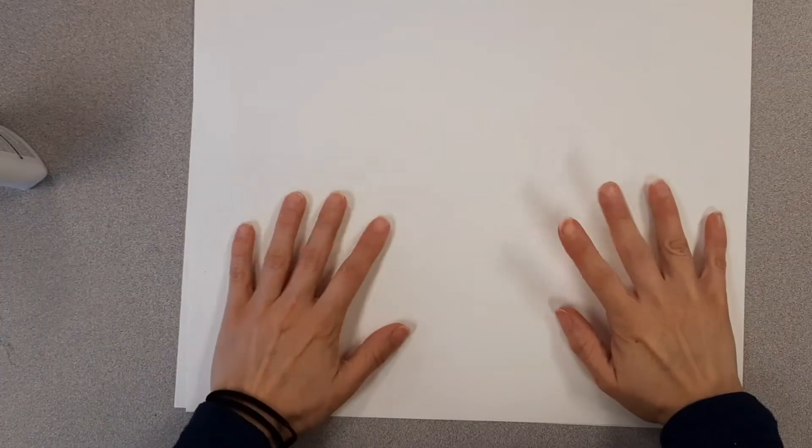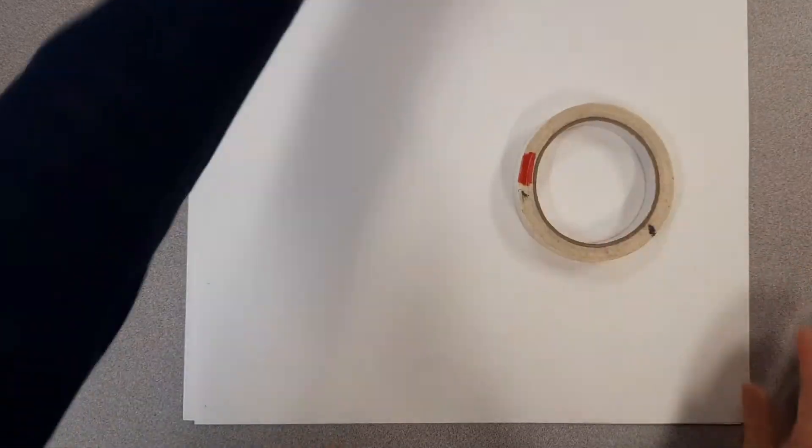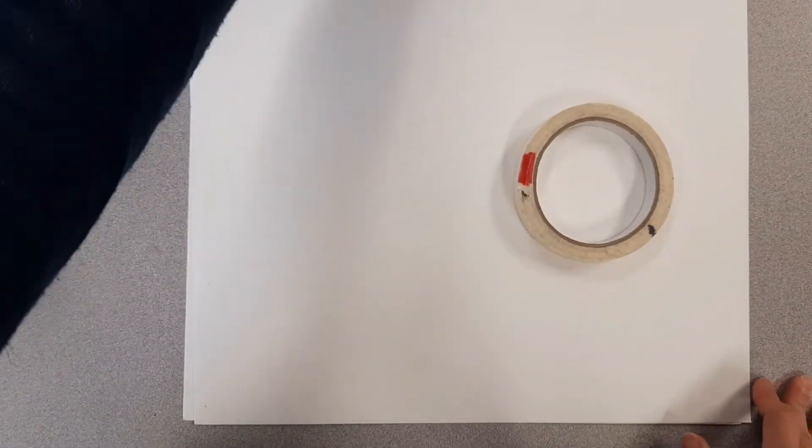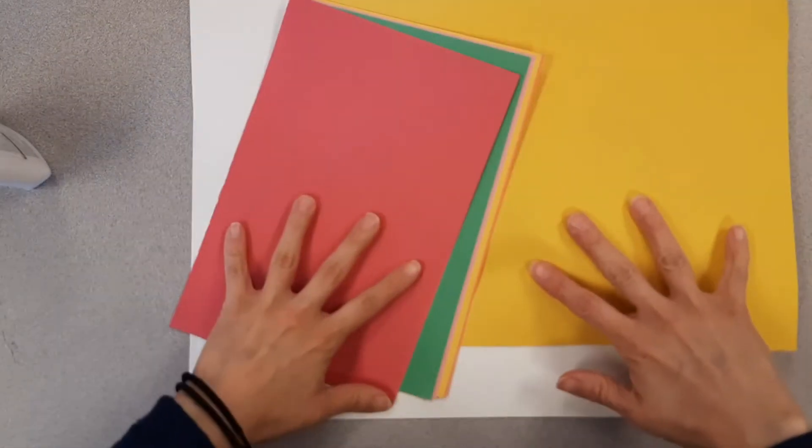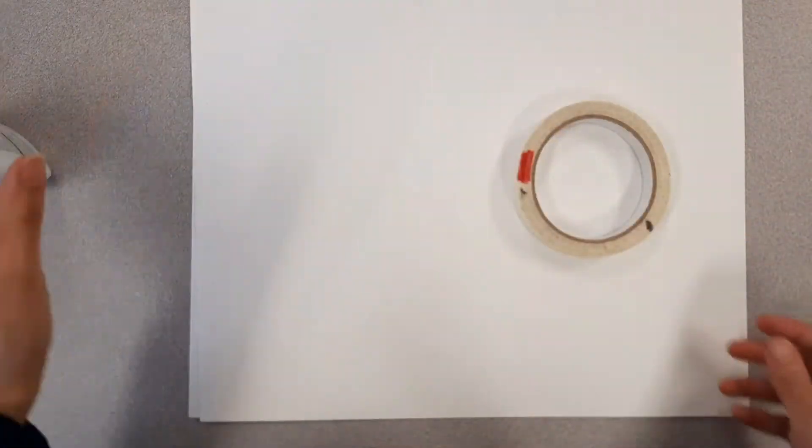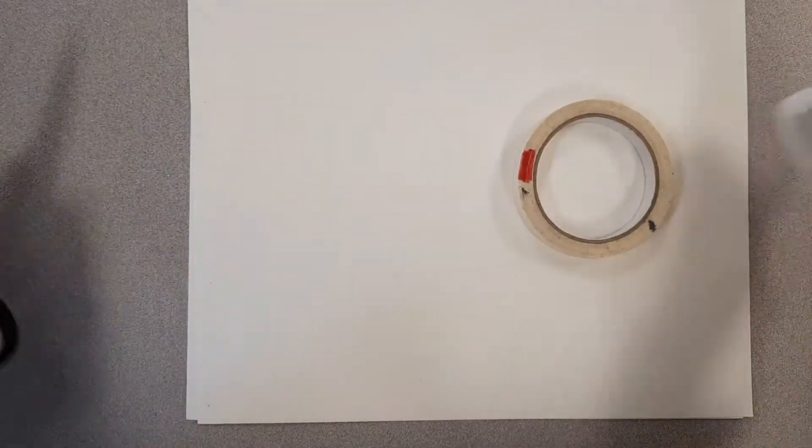Alright, for the piñata you're going to need your poster board. You have a big roll of it in your kit. You're going to need your masking tape. If you have tissue paper at home use that, but if not use the construction paper that I gave you. And you're going to need your glue and you're going to need a pair of scissors.